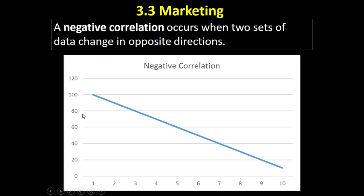A negative correlation occurs when the data change in opposite directions. On the left-hand axis we have price, and on the horizontal axis we have the level of demand. When we have a high price, we have a relatively low level of demand, and when we cut the price, demand increases. This is our classic demand curve represented by a negative correlation — as price goes up, demand falls; as price falls, demand rises.